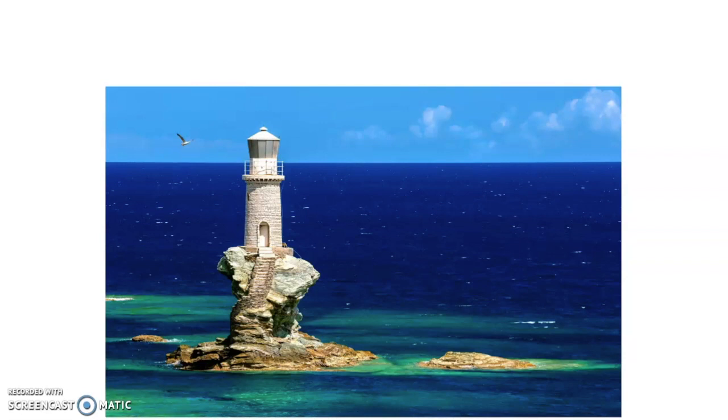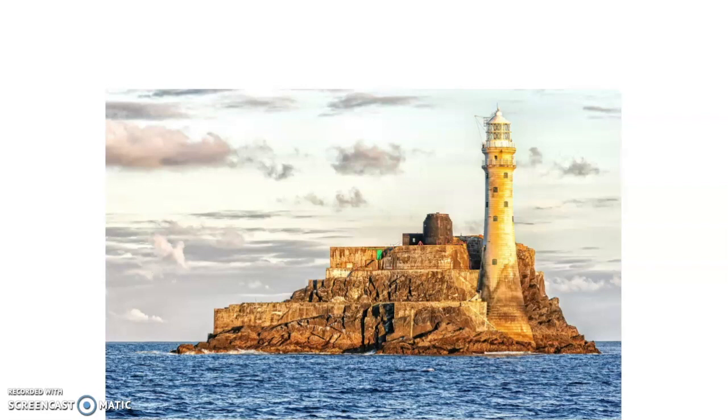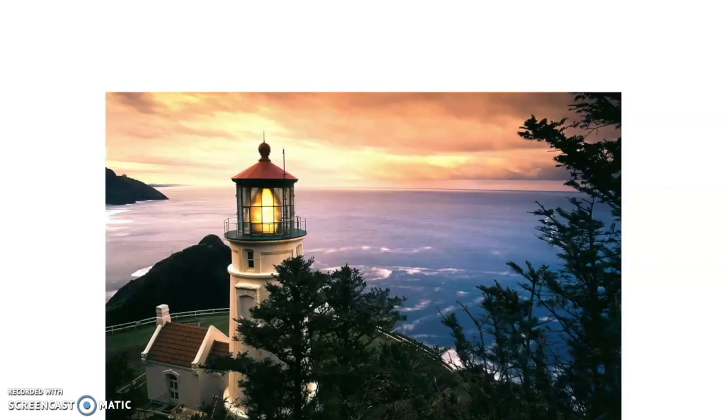When there's big storms, lighthouses are expected to still stand and guide sailors and ships home. Therefore, a lighthouse is a symbol of strength. They're often constructed on top of hills or cliffs, so they're really strong and resilient. They also represent hope and a safe haven, so when ships first see the glimmering light in the distance, they know they're close to safety.